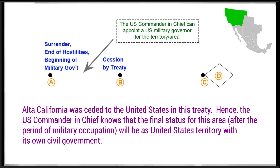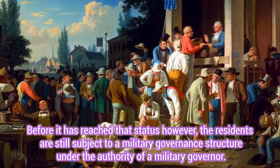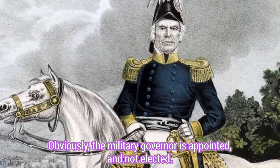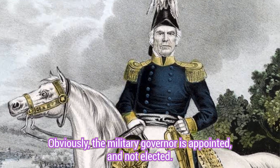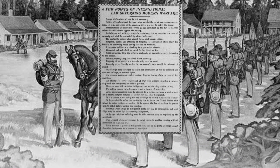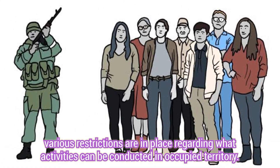Alta California was ceded to the United States in this treaty. Hence, the U.S. Commander-in-Chief knows that the final status for this area, after the period of military occupation, will be as United States territory with its own civil government. Before it has reached that status, however, the residents are still subject to a military governance structure under the authority of a military governor. Obviously, the military governor is appointed and not elected. Additionally, under the customary laws of warfare, various restrictions are in place regarding what activities can be conducted in occupied territory.